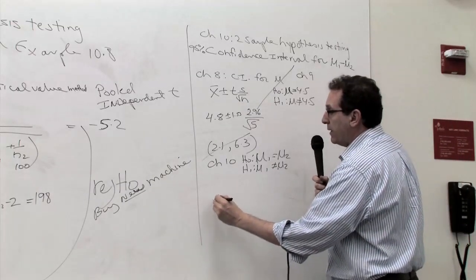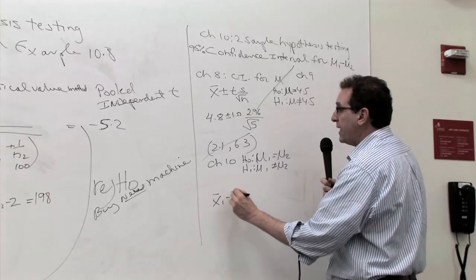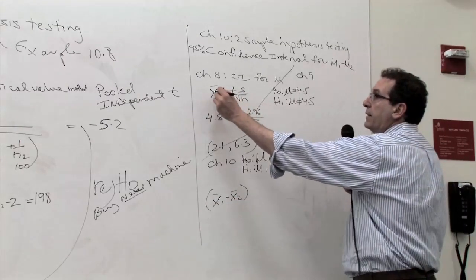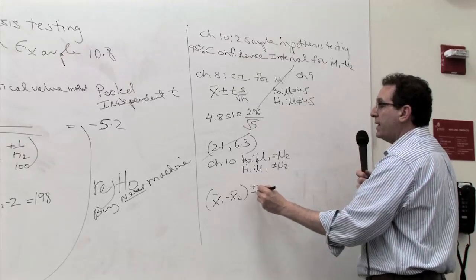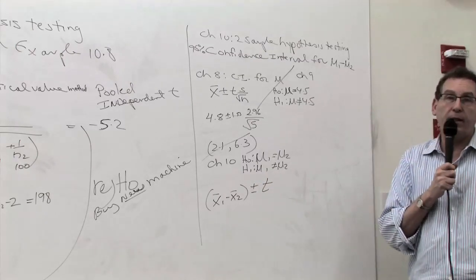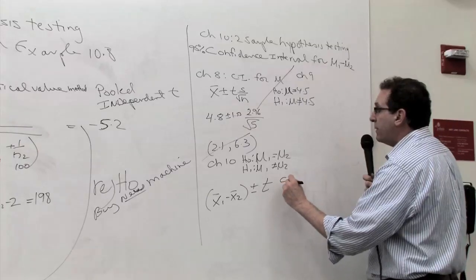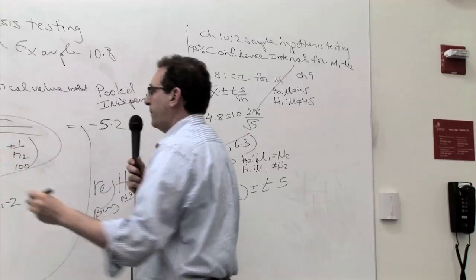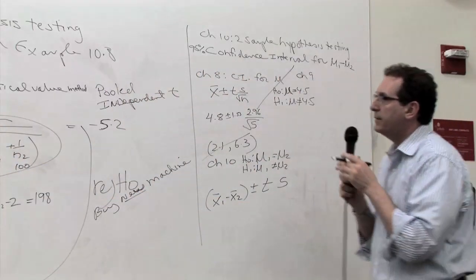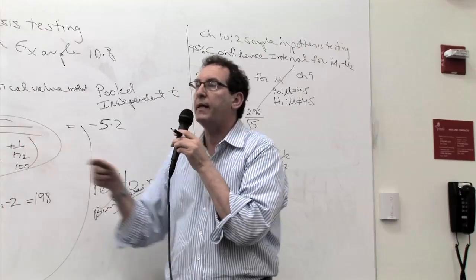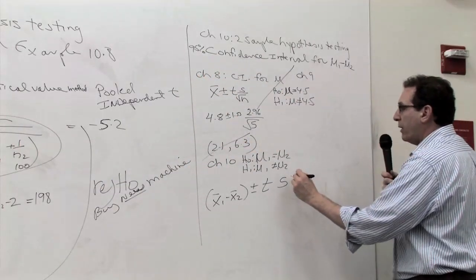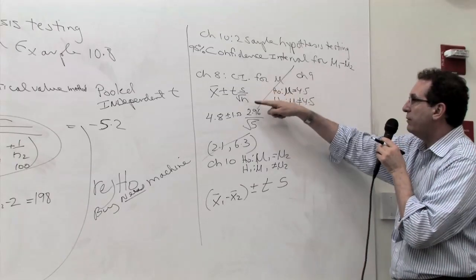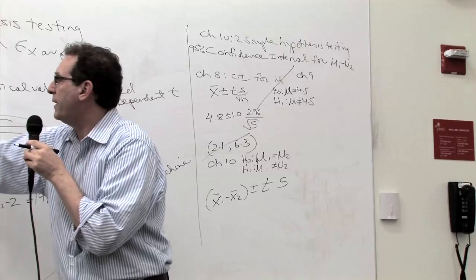The main part of the formula. The first part of the formula is to actually calculate the difference between the two averages. It's not one average, it's a difference of two averages. Plus or minus, it's still going to be a t depending upon how confident you want to be and the degree of freedom. It's still going to be an s, but it's not going to be one s. It's going to be a combination of the two s's. Instead of plugging in the simple s divided by the square root of n, we're going to plug in this whole thing underneath the radical side.